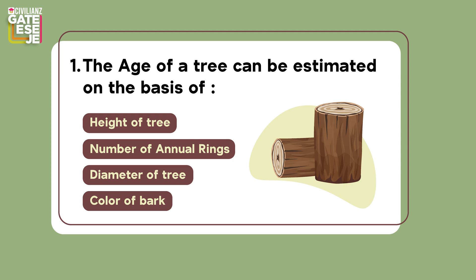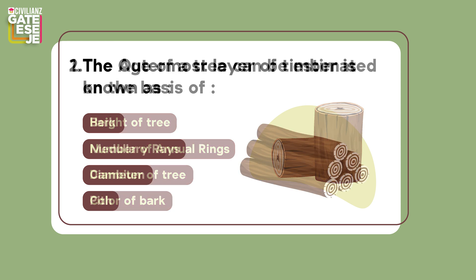Question 1: The age of a tree can be estimated on the basis of — (A) height of tree, (B) number of annular rings, (C) diameter of tree, (D) color of bark.